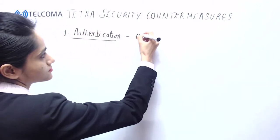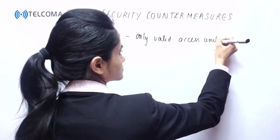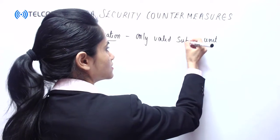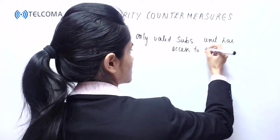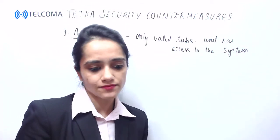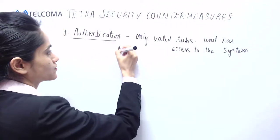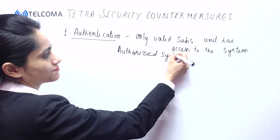Authentication means that it ensures that only a valid subscriber unit has access to the system. The subscriber will only try and access the authorized system. So here we can authorize the various users in the authentication process.